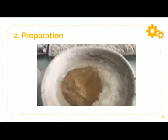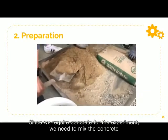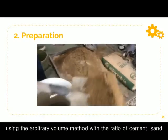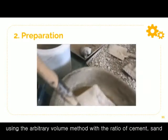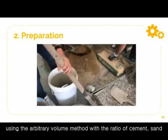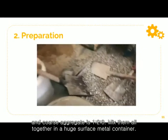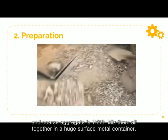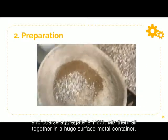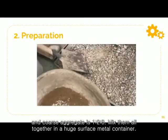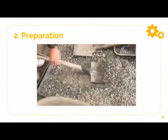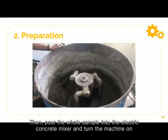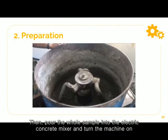Since we required concrete for the experiment, we need to mix the concrete using the arbitrary volume method with the ratio of cement, sand, and coarse aggregate at 1 to 2 to 3. Mix them all in a large metal container, then pour the whole sample into the electric mixer and turn the machine on.